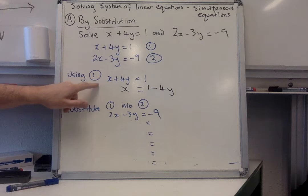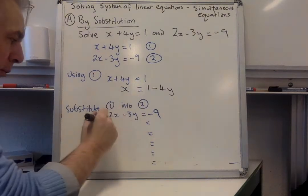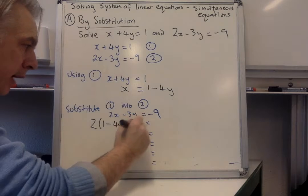Now I'm going to substitute equation 1, which is this one, now into 2 but in this format. So wherever the x is, I'm now going to put 1 minus 4y minus 3y equals minus 9.